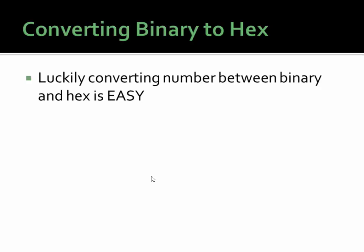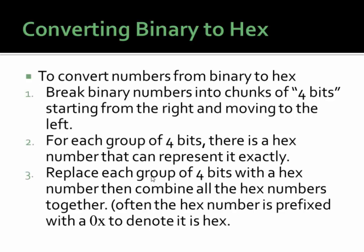Luckily, converting a number between binary and hex is very, very easy. To convert numbers from binary to hex, all you have to do is break the binary number into chunks of four digits, or four bits — each binary digit is called a bit — starting from the right and moving to the left. For each group of four bits, there is exactly one hex number that can represent it. You simply break things into groups of four bits, and if there's not enough digits to make four bits, you just add zeros to the left until you have exactly four. You replace each group of four bits with a hex number, then combine all the hex numbers together. We generally prepend it with a zero x to note that it's hex as opposed to decimal, because sometimes it's hard to tell a hex number from a decimal number if you don't have any of the A through F's in there.